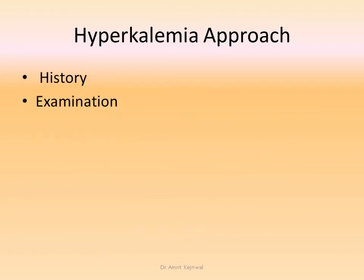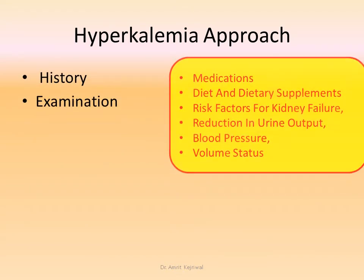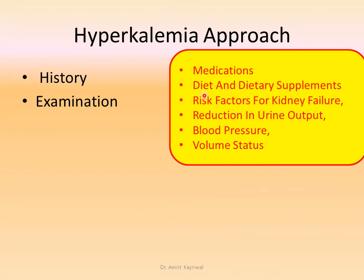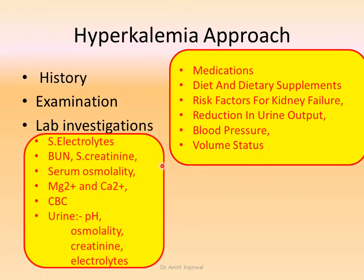In the approach to hyperkalemia, take a history and do an examination. In the history, ask for medications, diet and dietary supplements, risk factors for kidney failure, reduction in urine output, blood pressure, and volume status. Lab investigations include serum electrolytes, BUN and creatinine, serum osmolality, serum magnesium, calcium, CBC, and urine pH, osmolality, creatinine, and electrolytes. Some of these investigations may not be required for all patients but may be required for particular selected cases.